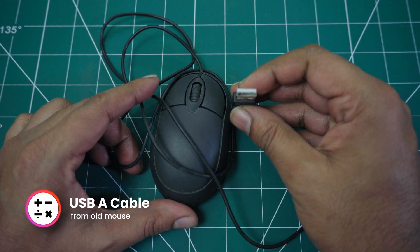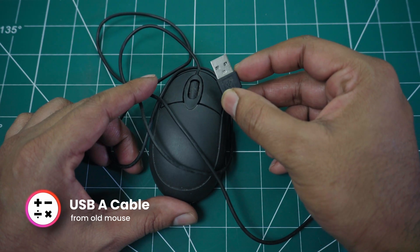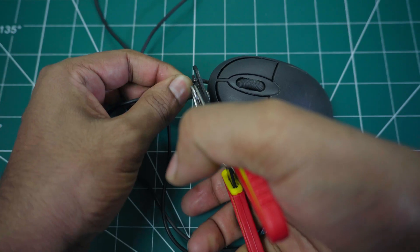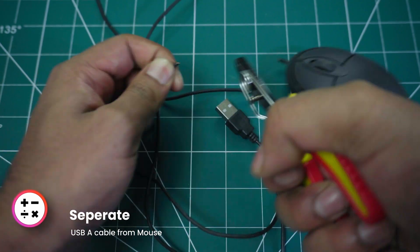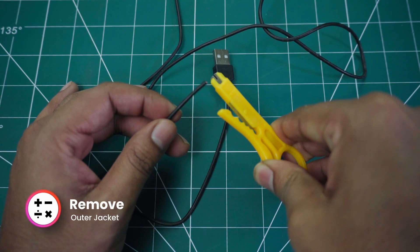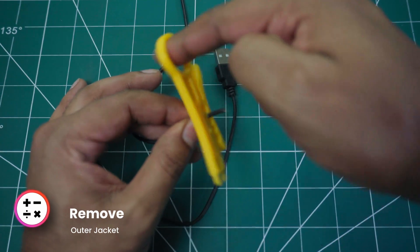I'm using a USB-A cable from an old mouse, but any USB-A cable will work. Separate the USB cable from the mouse. Carefully remove the outer jacket of the USB cable without damaging the inner wire.